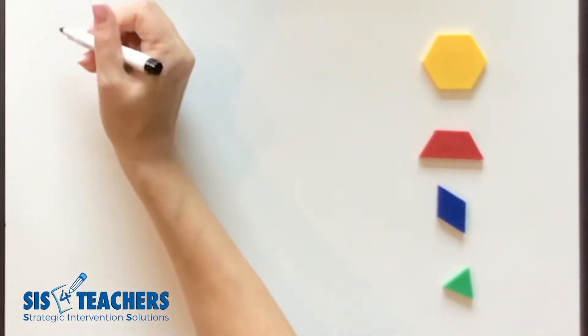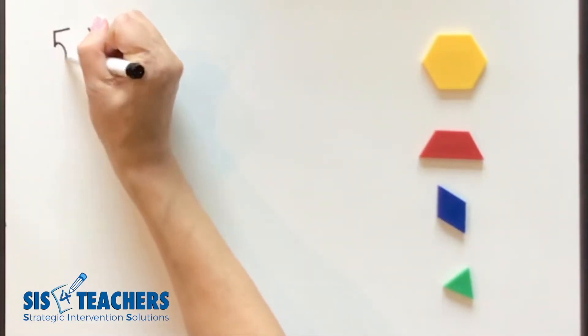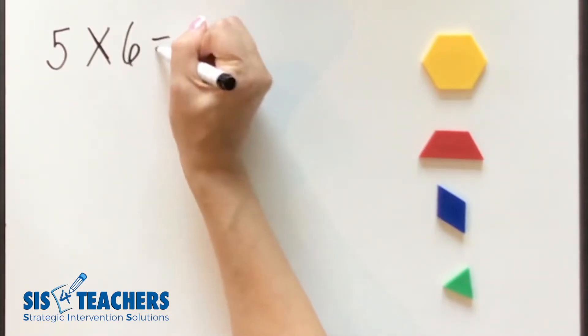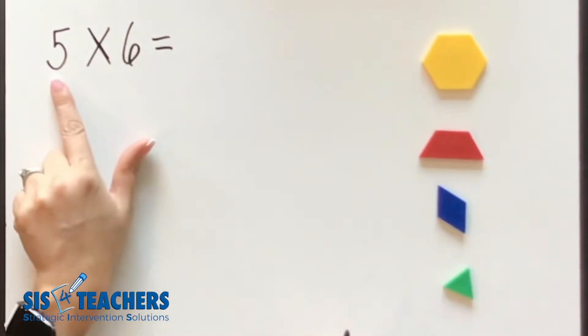As we start to look at understanding what we're doing in fractions, we want to look at how we understand multiplication first in whole numbers. What does this statement mean? Five times six.